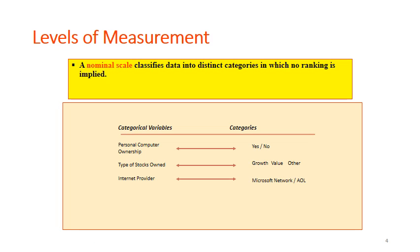Let's talk about levels of measurement from the types of data that we had. First off, the most basic level of measurement is what we call the nominal scale, which classifies the data into distinct categories in which, very important here, no ranking is implied. Things like personal computer ownership, you have yes and no, stocks owned, whether it's growth value or others, internet provider, even gender, male, female, is part of a categorical variable which will require nominal scale.